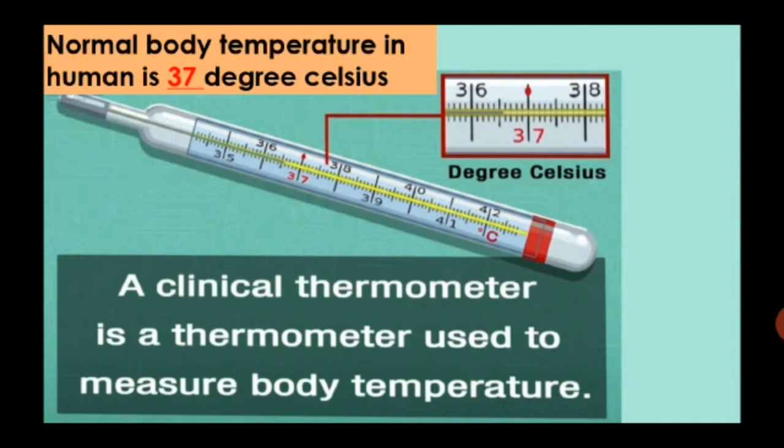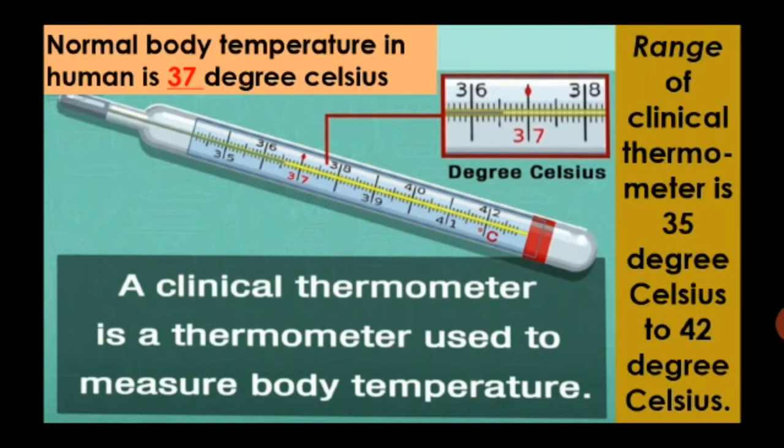So children, here is the clinical thermometer. We can see the picture of clinical thermometer. Do you know that the range of clinical thermometer is 35 degrees Celsius to 42 degrees Celsius and the normal body temperature in human is 37 degrees Celsius.